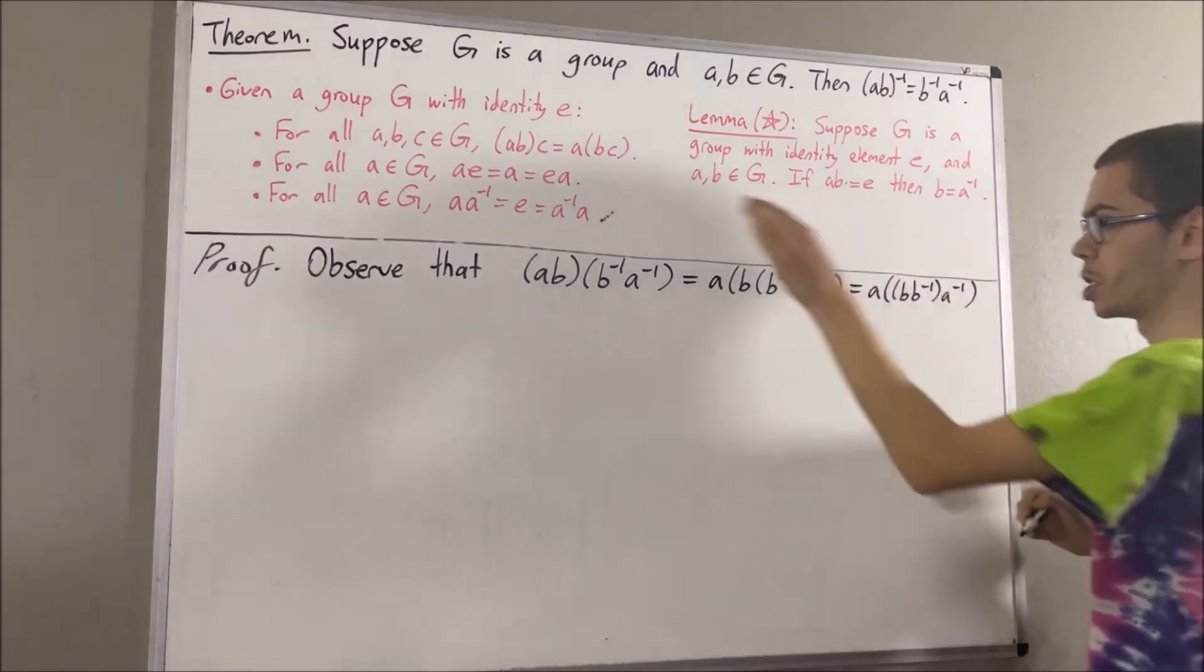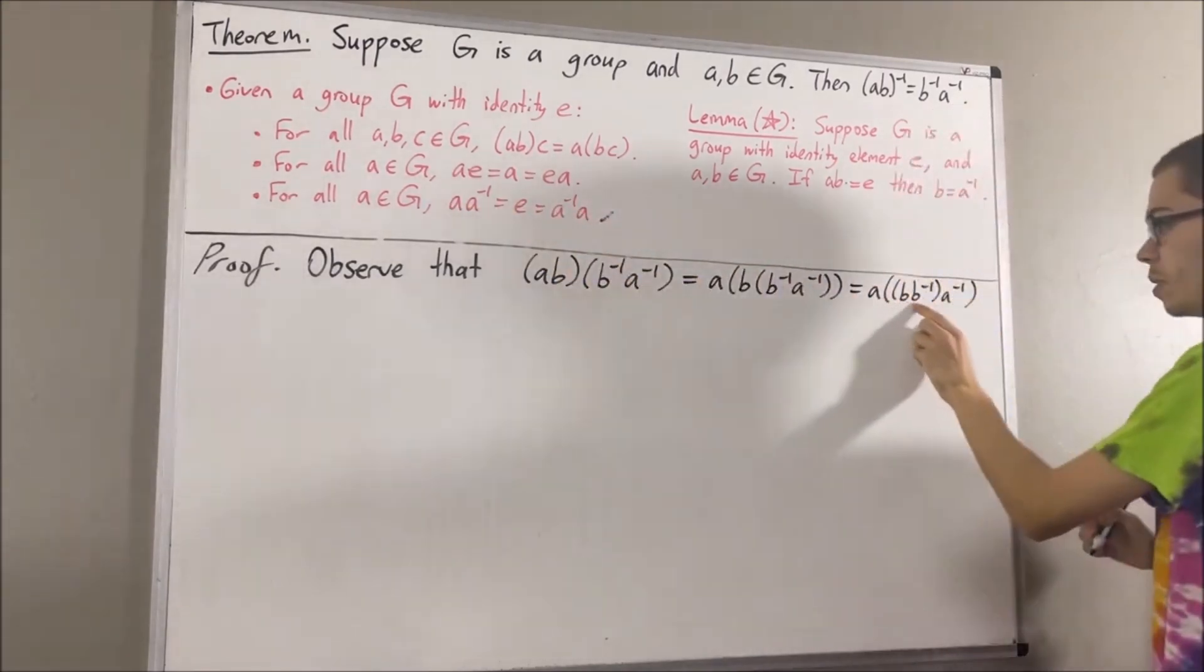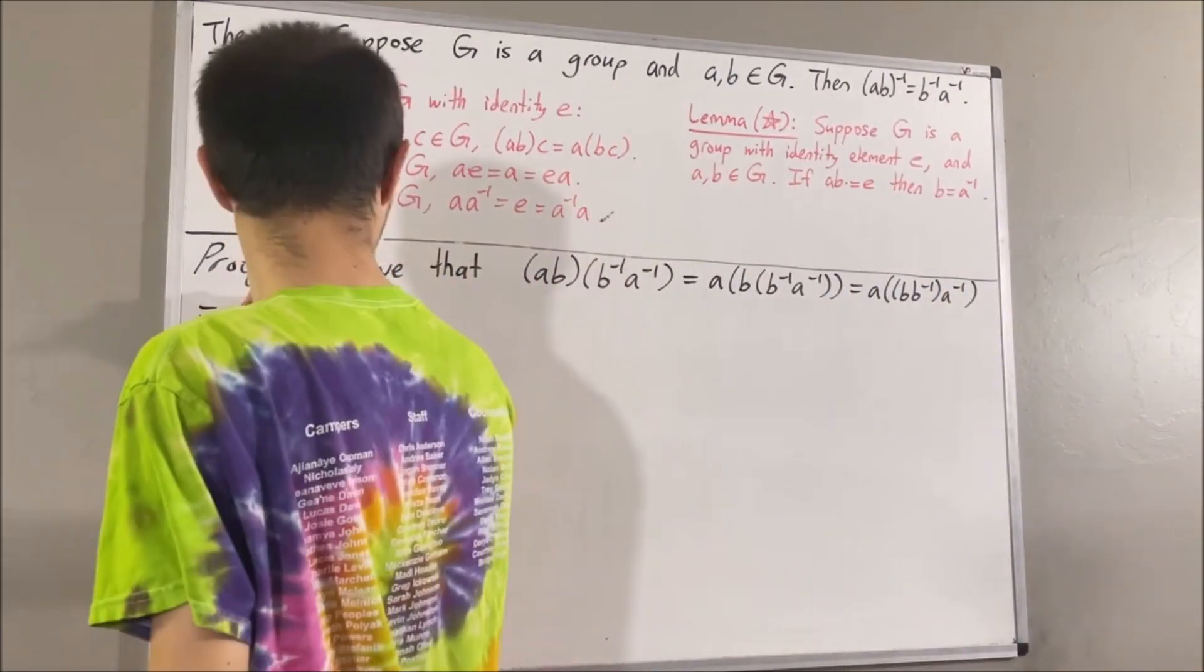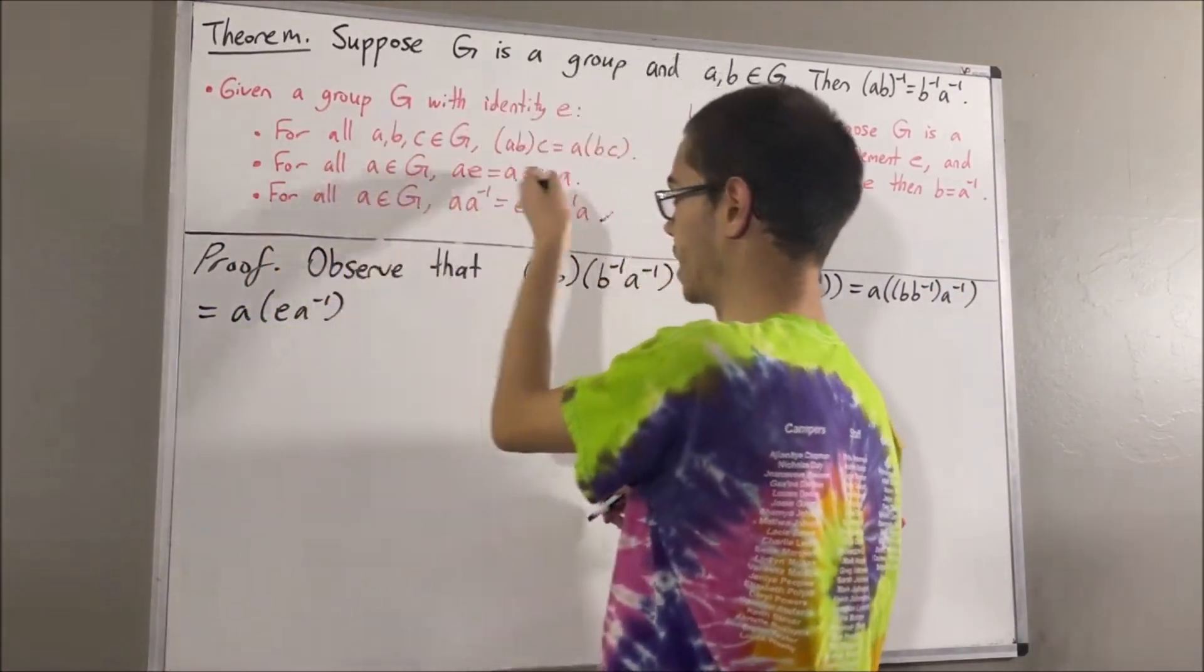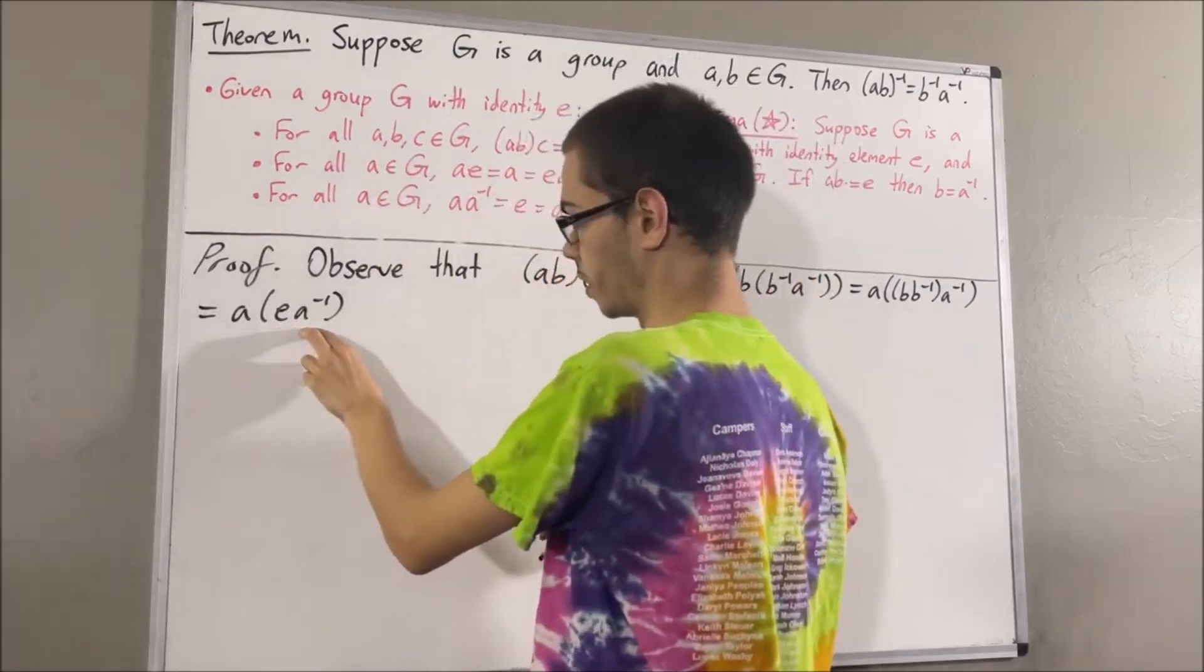And then, we know by definition of the inverse of an element, B times B inverse is equal to E. And then, we know by definition of the identity element, E times A inverse is equal to A inverse.